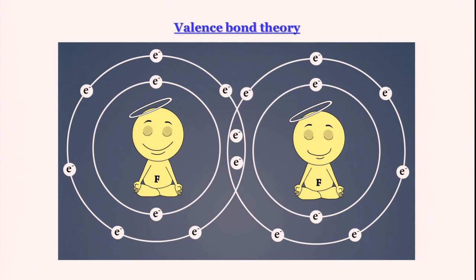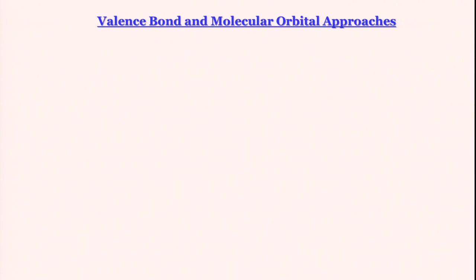To study bonding, earlier when we were in high school we studied things like Lewis electron dot structure kind of approach. Here we will go a little further and discuss two different approaches: one is valence bond approach and the other is molecular orbital approach.